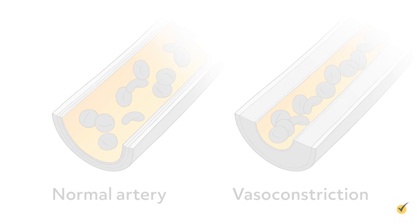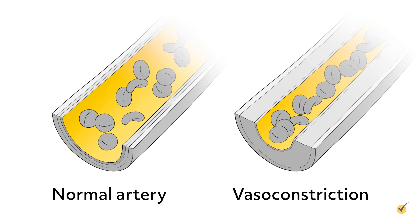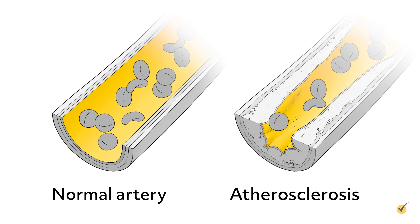Anything that alters the diameter of the arteries can affect the systolic blood pressure. This can include changes in cardiac output or stroke volume, exercise, nutritional differences, disease, and drugs. Stress, for example, can bring about vasoconstriction so that when the ventricles contract, the diameter of the arteries is smaller and the pressure of the blood against the vessel walls is greater, increasing the systolic blood pressure. Atherosclerosis, or the buildup of fatty plaque along the walls of the arteries, can result in stiff arteries with a narrow lumen, markedly increasing the systolic pressure.